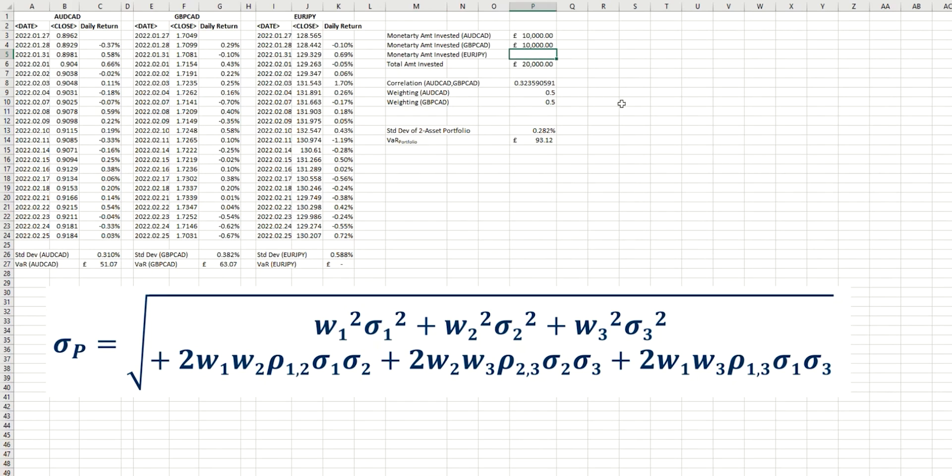And this then is where we can put that monetary amount. And let's start off with it at the same as the other two, at £10,000. And so you can see that the total amount invested has been automatically calculated as the sum of those. So let's just convert that to a currency.